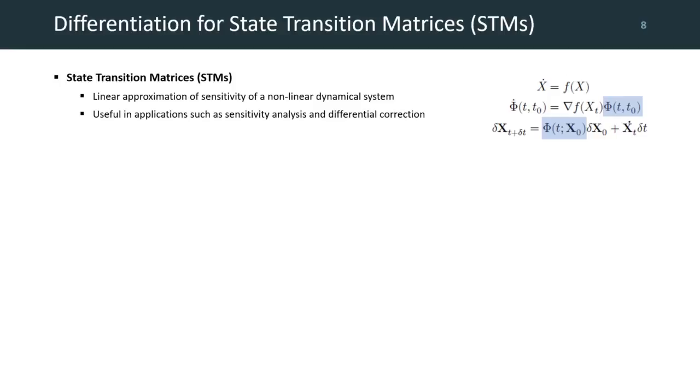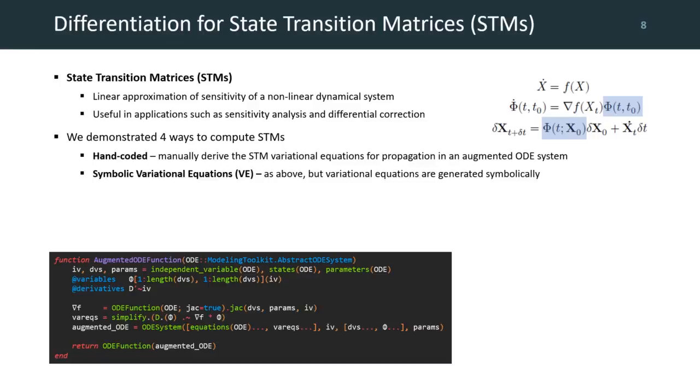An important part of trajectory design is the computation of state transition matrices, or STMs, which are a linear approximation of the non-linear dynamics of the system and are used for applications such as sensitivity analysis and differential correction. I tested four ways to compute these in Julia: the hand-coded way, in which we manually derive the equations necessary and include them directly in an augmented ODE system; symbolic variational equations, in which we use modeling toolkit.jl and symbolics.jl to automatically derive and compose together with the existing symbolic models.